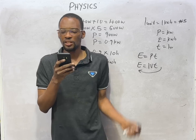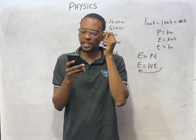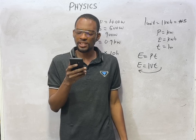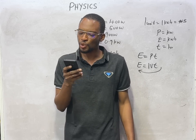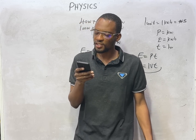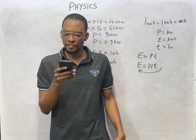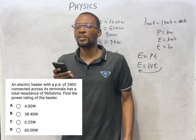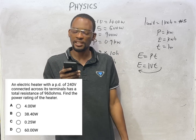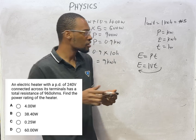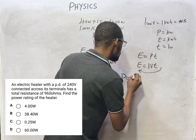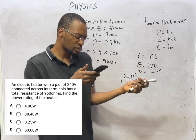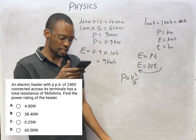An electric heater with a PD of 240 volts connected across its terminal has a total resistance of 960 ohms. Find the power rating of the heater. We have voltage and we have the resistance. The formula connecting power, voltage and resistance is P = V² / R. If you apply this formula, you are going to get 60 watts as your power.